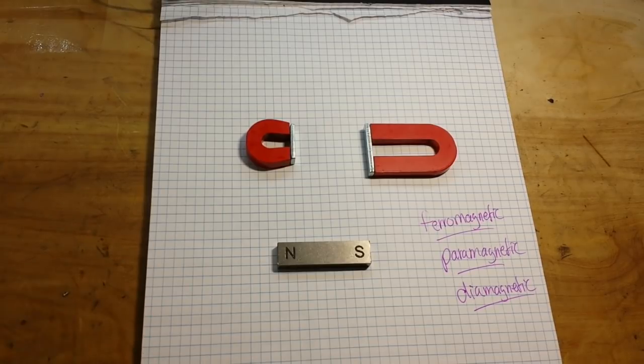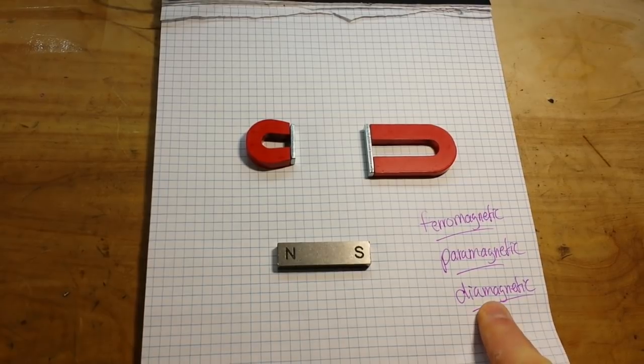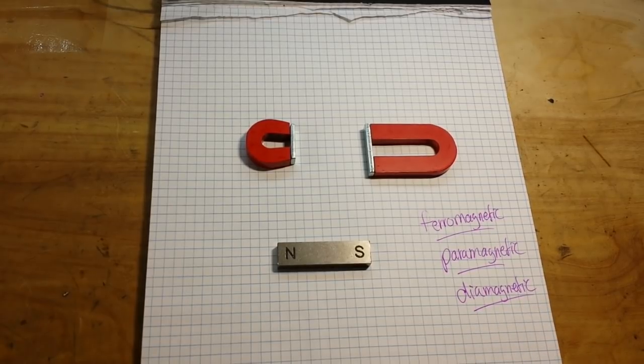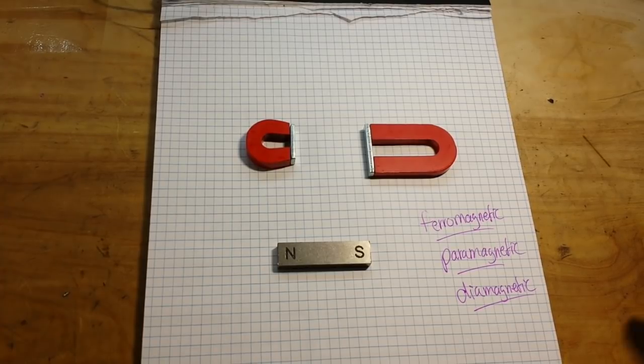An item that is magnetized will repulse another item that is magnetized when like poles are put together. That's really the only true test. And because some things are diamagnetic and kind of exhibit this property, that can be a little bit confusing.